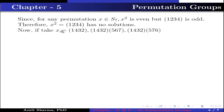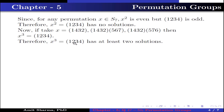Now, if we take x equal to the permutation (1 4 3 2) composed with (5 6 7), and also x equal to (1 4 3 2) composed with (5 7 6), then we get x³ = (1 2 3 4) in each case. Therefore, x³ = (1 2 3 4) has at least two solutions.